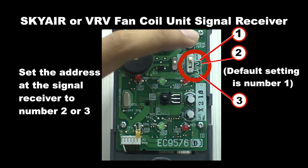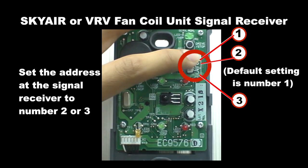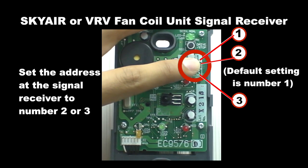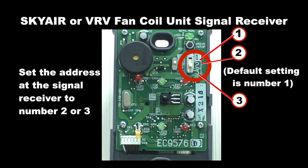The setting procedure. Set the address switch at the Signal Receiver to number 2 or 3. Default setting is number 1.